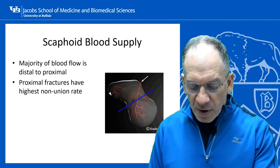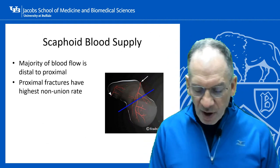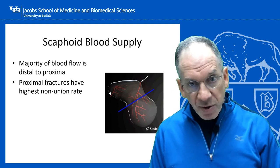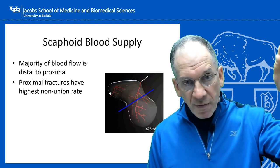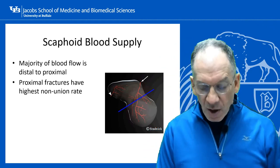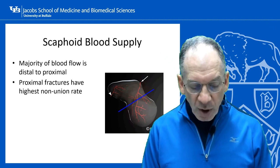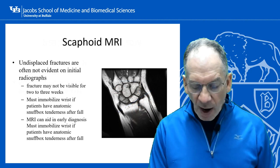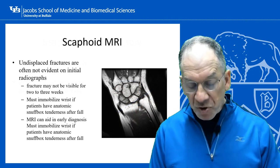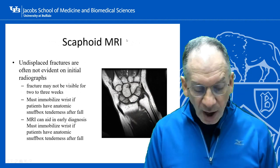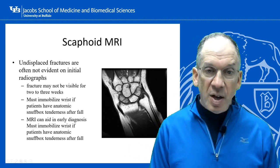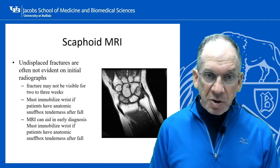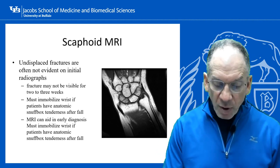This slide shows scaphoid blood supply. The main vessel enters distally along the dorsal radial aspect of the scaphoid and runs back proximally toward the wrist — so the blood supply goes in a retrograde fashion. The closer the fracture is to the wrist or proximal scaphoid, the higher the non-union rate because blood supply is worse. On MRI, a scaphoid fracture may only be evident early if you can't see anything on plain radiograph, making MRI extremely helpful for early diagnosis.